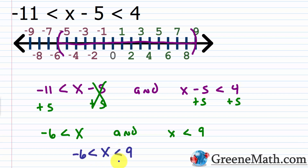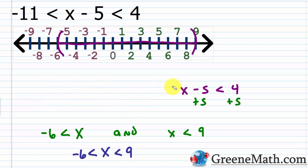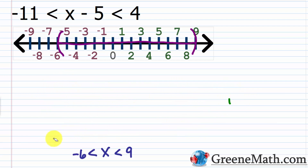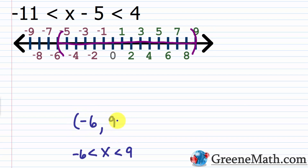Besides graphing, you can write the solution in interval notation. Since negative 6 is not included, put a parenthesis next to negative 6, then a comma, then 9, then a parenthesis since 9 is not included either. So the interval notation is (-6, 9). That's the solution for this three-part inequality written two different ways, plus the graph.